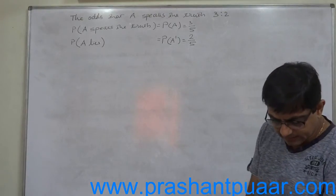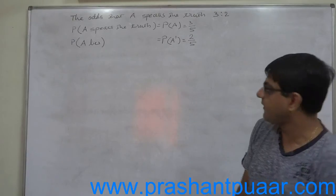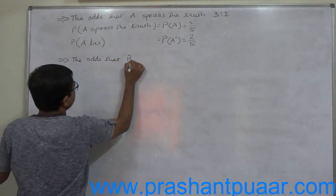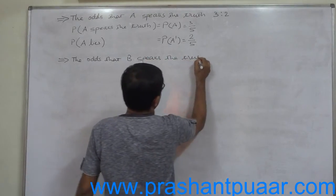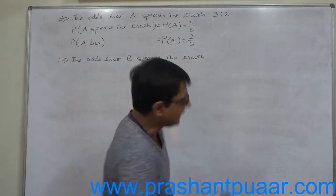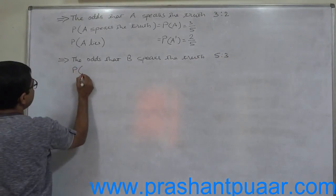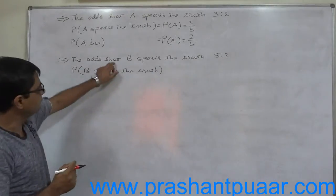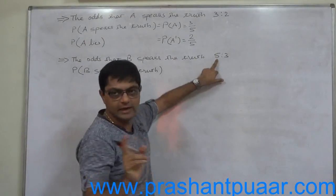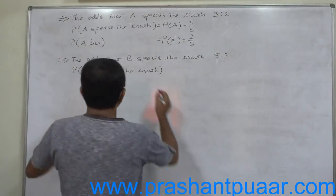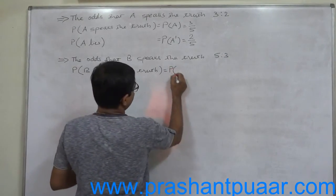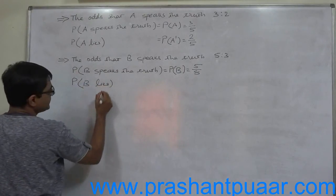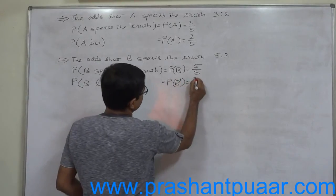The odds that B speaks the truth are 5 is to 3. Again, there is no use of the word 'against', so this is the simple case. The first number, 5, is for speaking truth and the second number, 3, is for lying. Therefore, probability that B speaks the truth, P(B), equals 5 by 8, and the probability that B lies, P(B complement), equals 3 by 8.